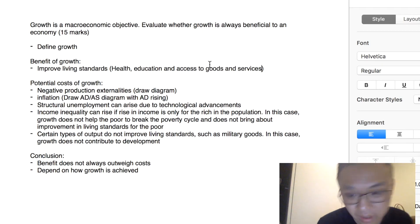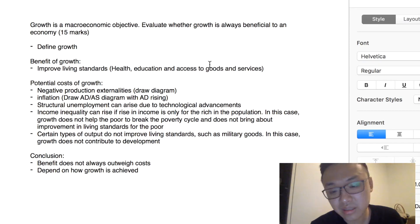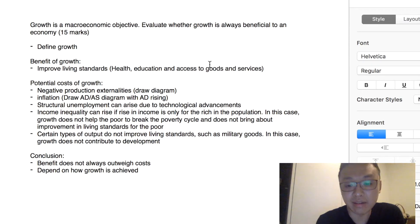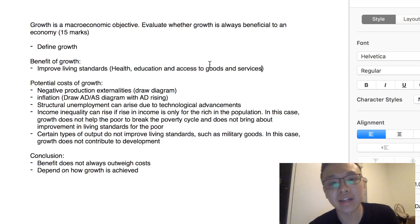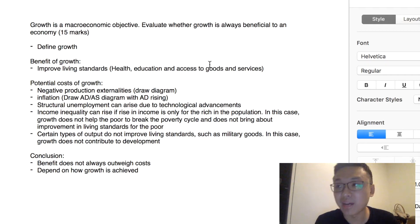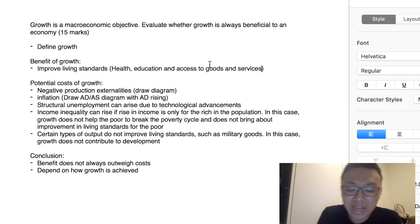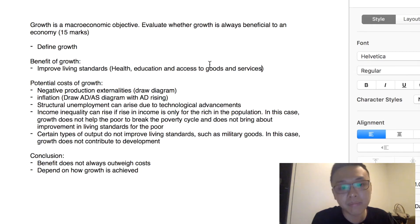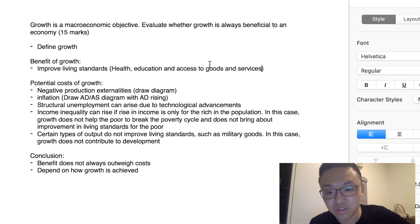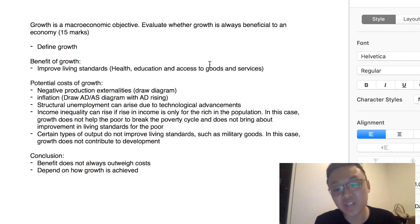But what are the potential costs of growth? The first cost is that economic growth can lead to more negative production externalities. A good example is China — economic growth in China has led to a large amount of pollution, which has had a negative impact on the health of people in China. You can draw the negative production externalities diagram to show that this leads to a welfare loss for society.